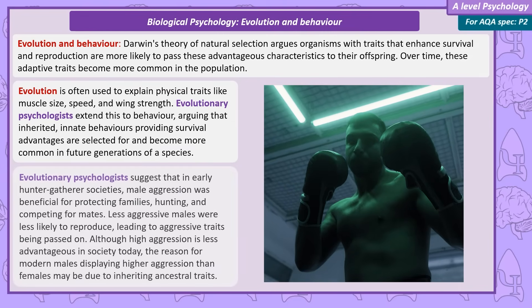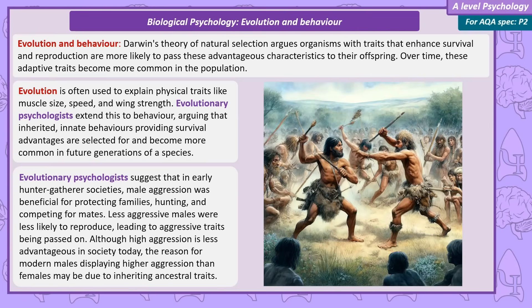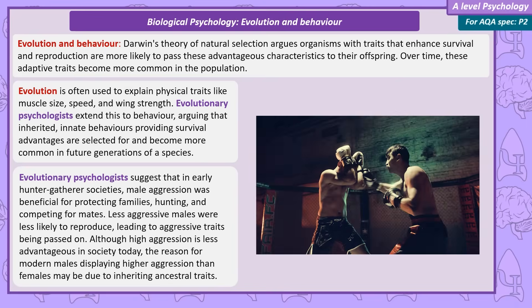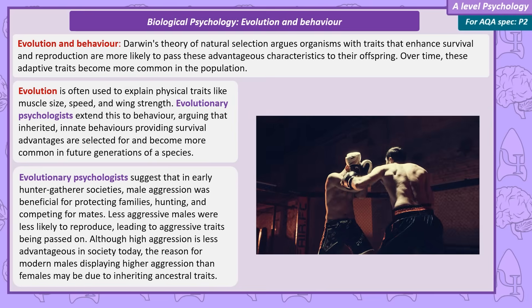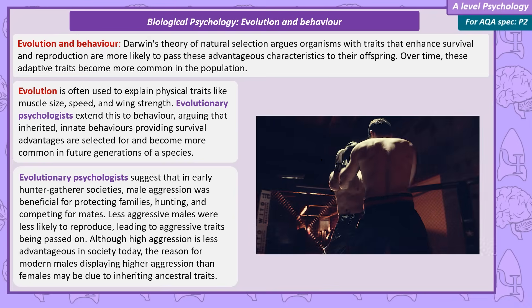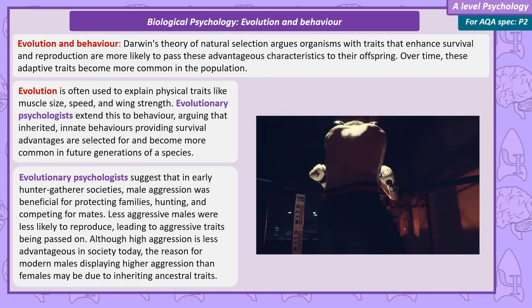Evolutionary psychologists explain human aggression this way. In early hunter-gatherer societies, aggressive behaviour — particularly in males — was useful in protecting a family, hunting prey, and standing out from other males when attracting a mate. Those males that were less aggressive were less likely to pass on their passive genes. We are all descendants of hunter-gatherers who managed to pass on their genes. While higher levels of aggression are not as useful in modern society, we do still have the genes of our ancestors, which might explain the higher levels of aggression in modern males compared to females.